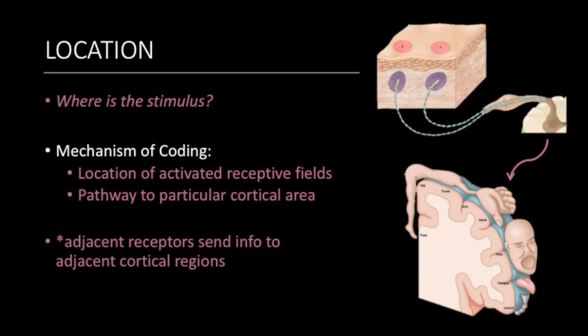The location of a stimulus can be determined by the location of the receptive fields that are activated and the pathway that is activated to transmit this information to a particular area of the cortex. Also, the input from adjacent sensory receptors is processed in adjacent regions of the cortex. By looking at which neuron brought the information, we can determine where it came from.